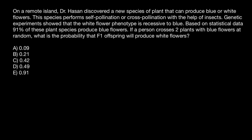Hello and welcome to Nikolai's Genetics Lessons. Today's question comes from one of my subscribers. On a remote island, Dr. Hassan discovered a new species of plant that can produce blue or white flowers. The species performs self-pollination or cross-pollination with the help of insects. Genetic experiments showed that the white flower phenotype is recessive to blue. Based on statistical data, 91% of these plant species produce blue flowers. If a person crosses two plants with blue flowers at random, what is the probability that the F1 generation will produce white flowers?